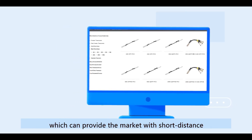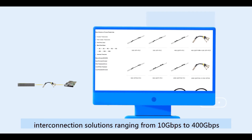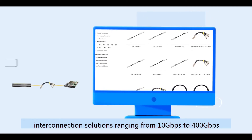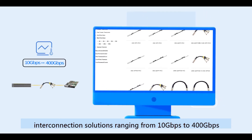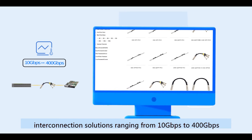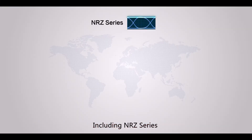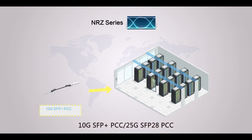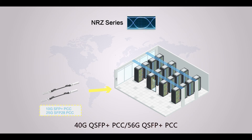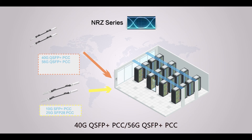GigaLite can provide the market with short-distance interconnection solutions ranging from 10 Gbps to 400 Gbps, including NRZ series: 10G SFP+ PCC, 25G SFP-28 PCC, 40G QSFP+ PCC, 56G QSFP+ PCC.